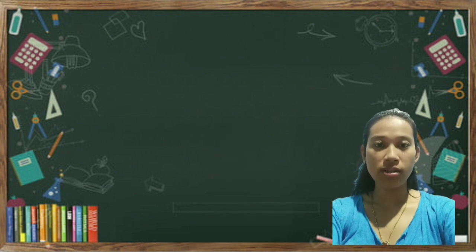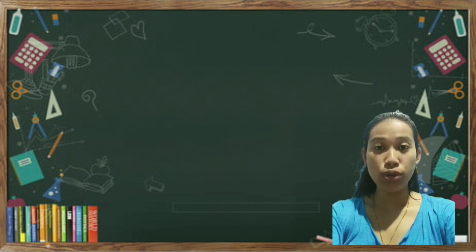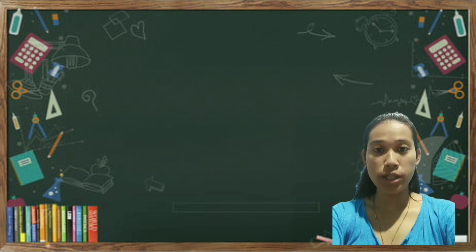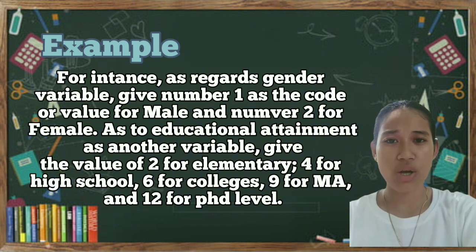Let's say the variable is gender. So, as regards to gender, what will you do? You are going to give a certain number which will serve as a code for that specific variable. You can give 1 as the code for male and 2 for female.